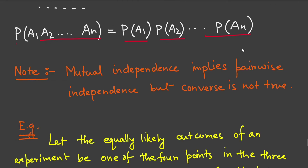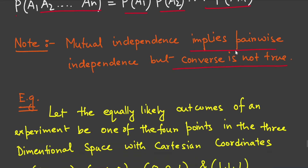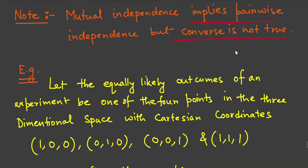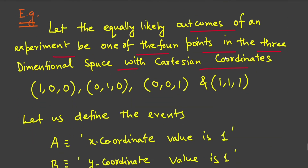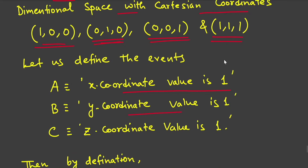Let us take an example to understand this more clearly. Let the equally likely outcomes of an experiment be one of four points in three-dimensional Cartesian space. We take the four points: (0,1,0), (0,0,1), (1,0,0), and (1,1,1).